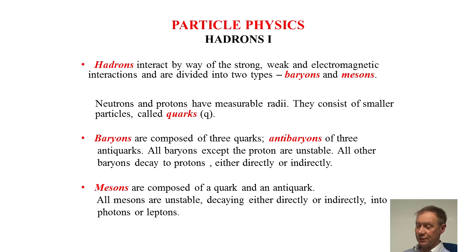Neutrons and protons have measurable radii and consist of smaller particles called quarks. Baryons are composed of three quarks, antibaryons of three antiquarks. All baryons except the proton are unstable. All other baryons decay to protons either directly or indirectly.